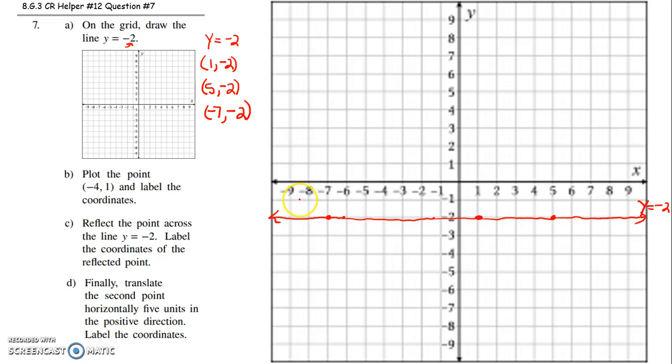And then we normally label our line, y equals negative 2. And what throws students off sometimes, they're like, but the y-axis is a vertical line. I get that. But for y equals negative 2, every point on that line will be two units down from wherever you go, left or right. So always y equals some number will be a horizontal line.